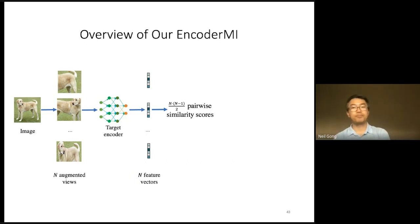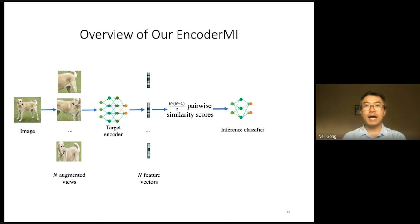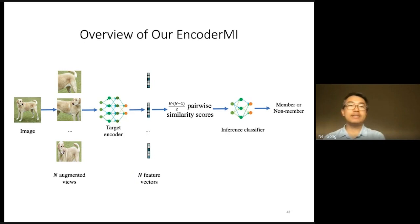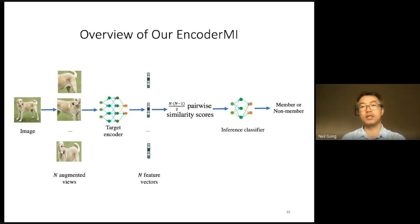Based on this observation, we propose our Encoder MI. Suppose we aim to infer the membership status of an image. We first create N random augmented views of the image using data augmentation, then use the target encoder to produce a feature vector for each augmented view, and finally calculate the pairwise similarity scores between the N feature vectors. In our experiment we use cosine similarity. Then, based on these pairwise similarity scores, we use a binary classifier — which we call the inference classifier — to infer whether the image is a member or non-member. The inference classifier is a key component of our method.